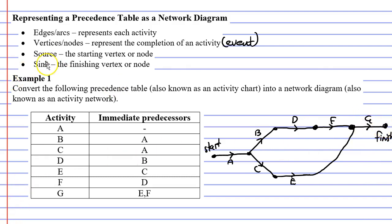So let's revise what we have learned. We had edges, also known as arcs, and they represent each activity. They had to have an arrow to show the direction they go in, and a letter to show which activity they represent.